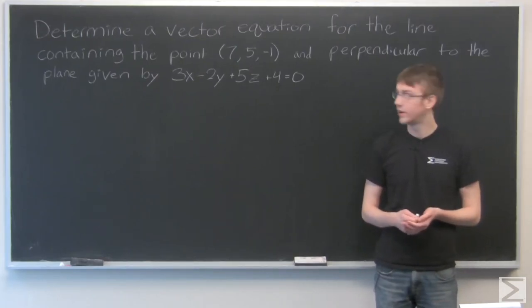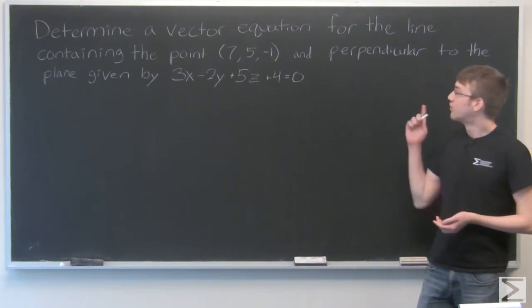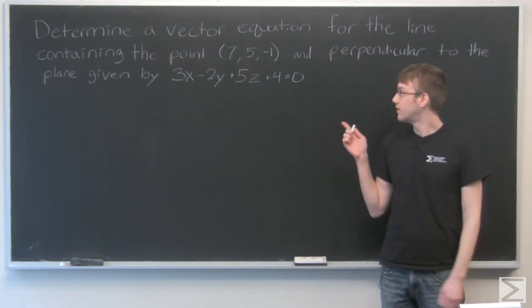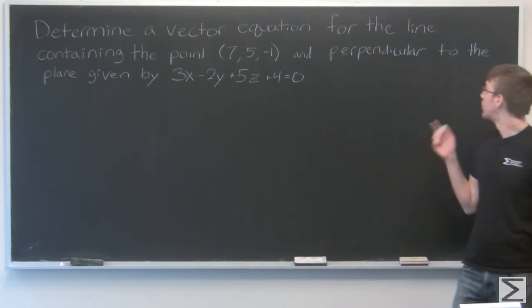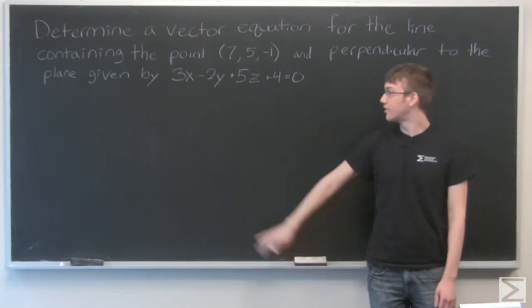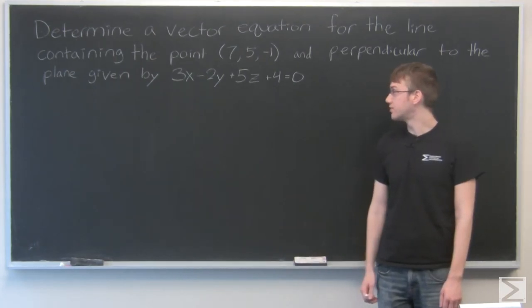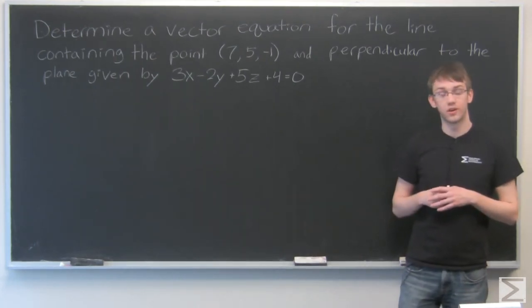OK, so for this problem we need to determine a vector equation for the line containing the point and perpendicular to the plane given by 3x minus 2y plus 5z plus 4 equals 0.